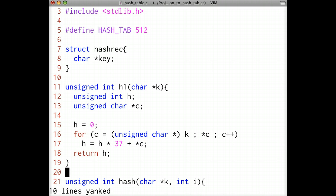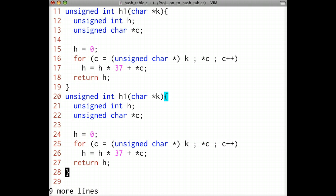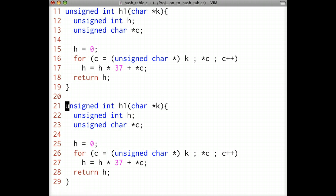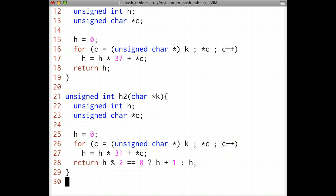H2 is a different hash function and it's similar to h1. It takes one argument, a pointer to a character string. Just like h1, we iterate through the characters and compute the hash, but I've used a different prime number than h1. Remember that the size of the hash table and the value that h2 returns must be co-prime. Before we return the computed hash, if the hash value is a multiple of 2, that is to say it's even, then we add 1 so that it becomes odd.